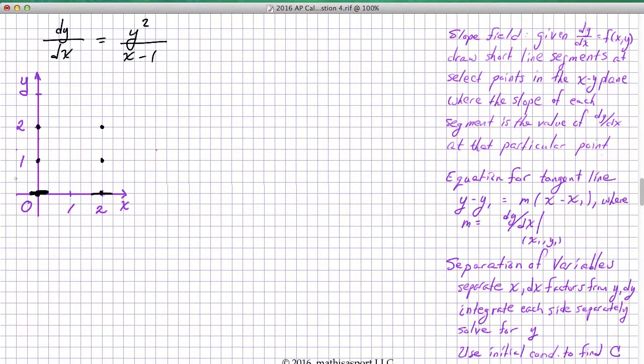Let's go ahead and take x equals 0, y equals 1. 1 squared is 1. 0 minus 1 is negative 1. 1 over negative 1. We're doing a line segment with a slope of negative 1. Here, if you think about it, the denominator will change from negative 1 to positive 1, but the numerator won't change. And so our slope now becomes positive 1.